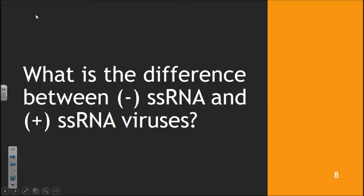What is the difference between negative single-stranded RNA versus positive single-stranded RNA viruses? The key difference is that negative single-stranded RNA viruses require an additional step. Positive single-stranded viruses are in the correct orientation for a ribosome to bind and translate into protein directly. However, negative single-stranded RNA viruses are in the three-prime to five-prime direction, which means they cannot be translated by a ribosome right away. Instead, they must first be converted into the correct orientation, and then translated into protein.